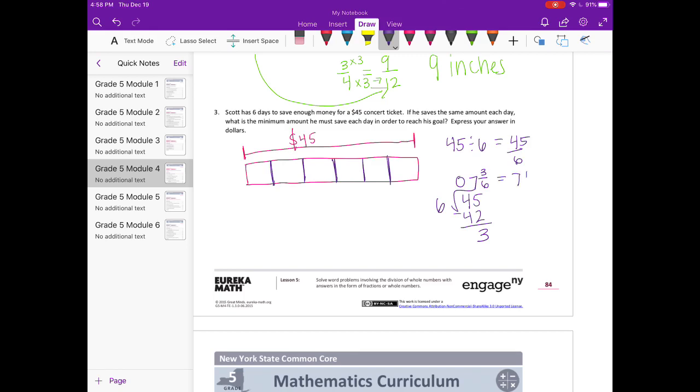Which is equal to seven and a half. So each day he needs to make seven and a half dollars. But it wants us to express that in money form. So think about a half dollar. If you had half of a dollar, you would have 50 cents. So this is equal to $7.50 per day is what he needs to save.